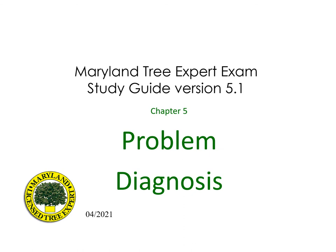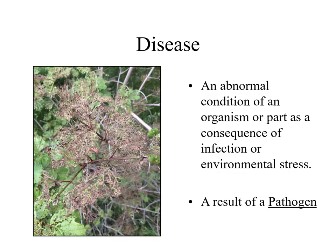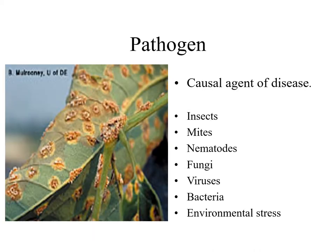Maryland Tree Expert Exam Study Guide version 5.1, Chapter 5: Problem Diagnosis. Disease is an abnormal condition of an organism or part as a consequence of infection or environmental stress. It is the result of a pathogen. A pathogen is a causal agent of disease that can include insects, mites, nematodes, fungi, viruses, bacteria, and environmental stress.